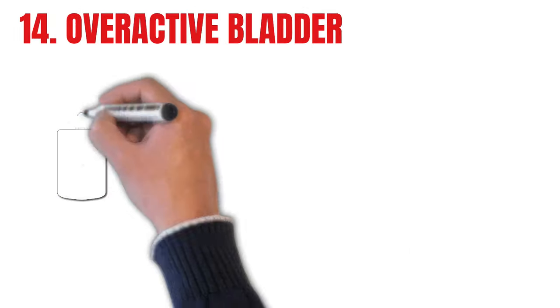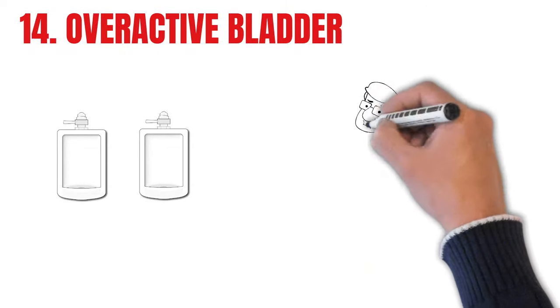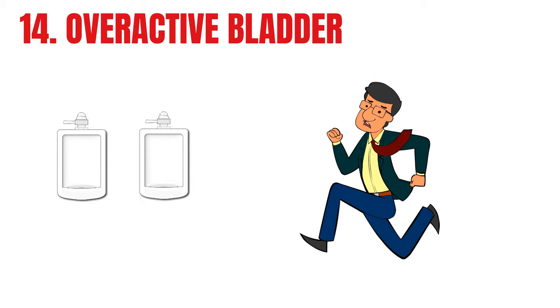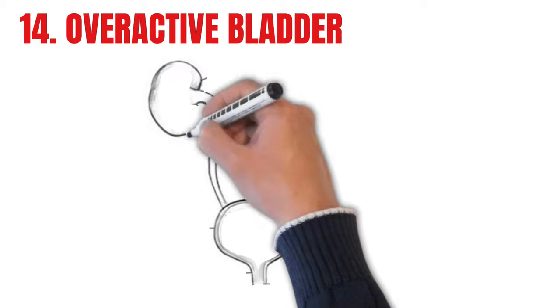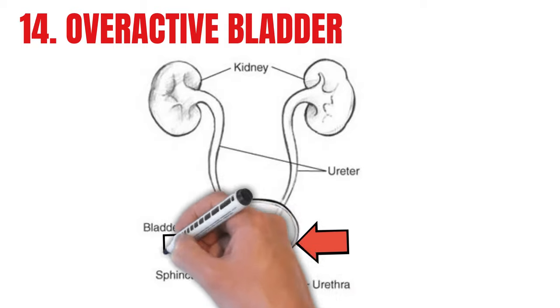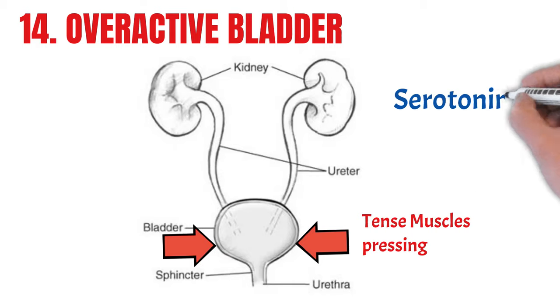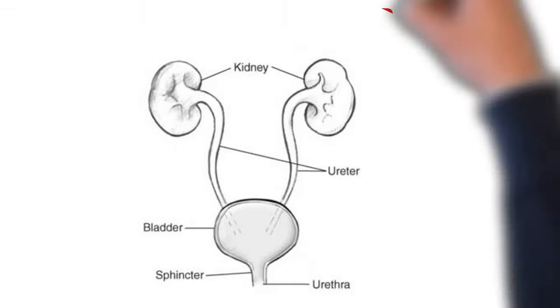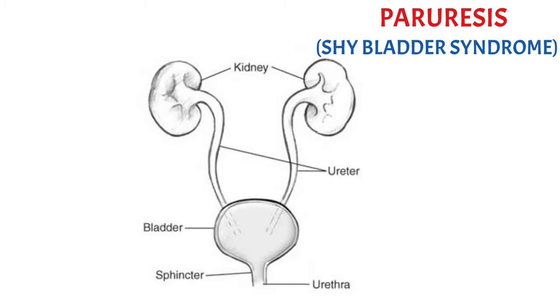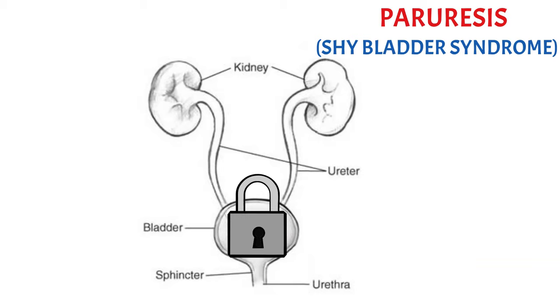Fourteen. Overactive bladder. An increase in the need to urinate is a little understood anxiety symptom. Tense muscles squeezing the bladder is a fairly simple explanation, but there are more complicated theories about the serotonin system and the effect of cortisol on the bladder. One thing is sure is that there is definitely a correlation between anxiety and frequent urination. And by the way, a type of social anxiety called paruresis can cause the bladder to completely lock, and I have a whole series of videos on that subject.